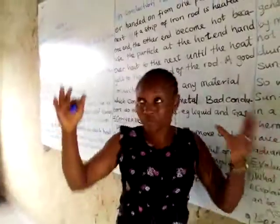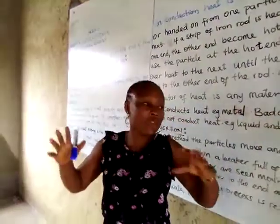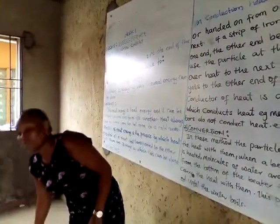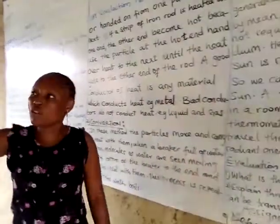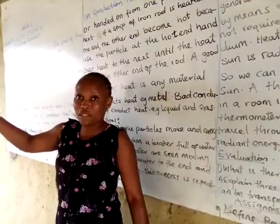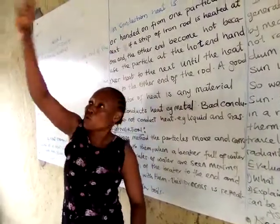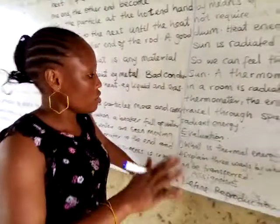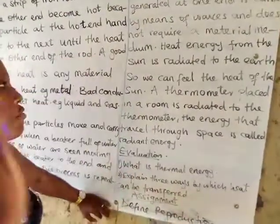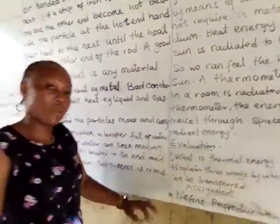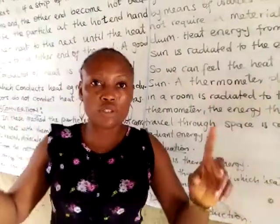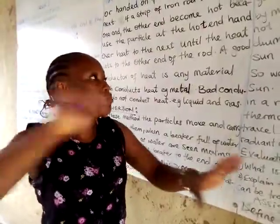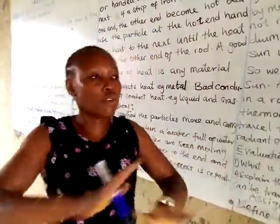Look at the sun shining outside. If you observe, this sun is not shining in just one particular place. The sun goes round and radiates throughout the world for everybody to feel it. Every individual feels the sun, whether you are in Nigeria or in America — anywhere in the world. The sun is just one, but it circulates and radiates round the world. That is radiation.